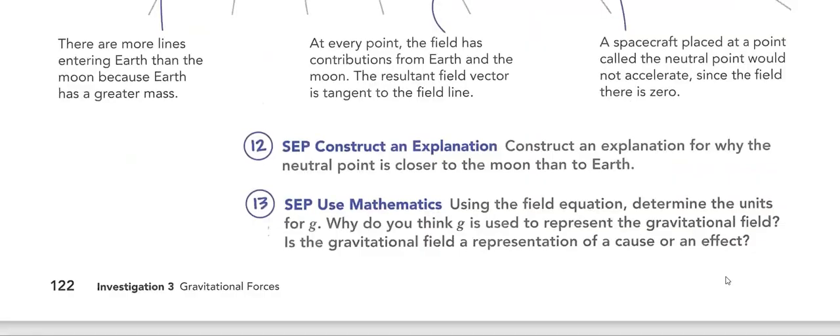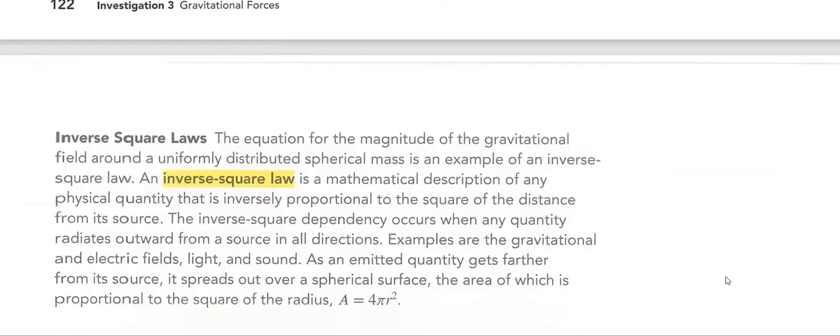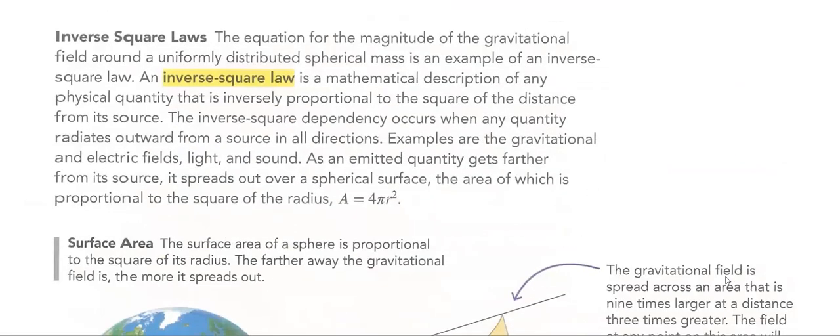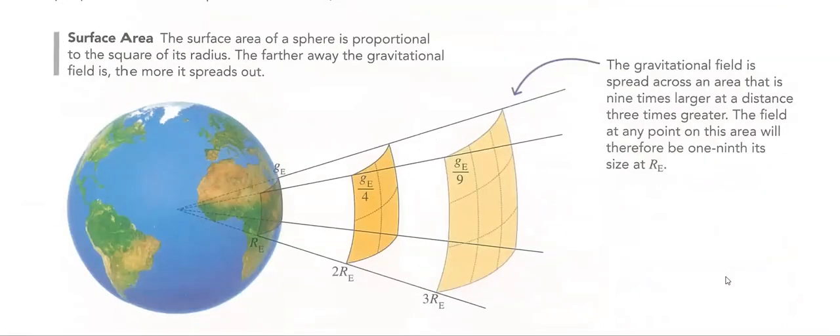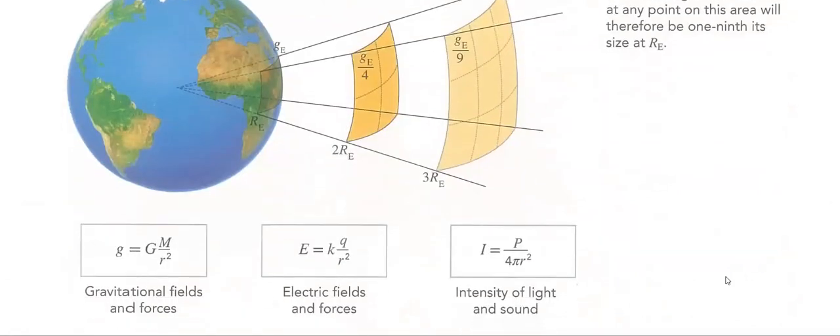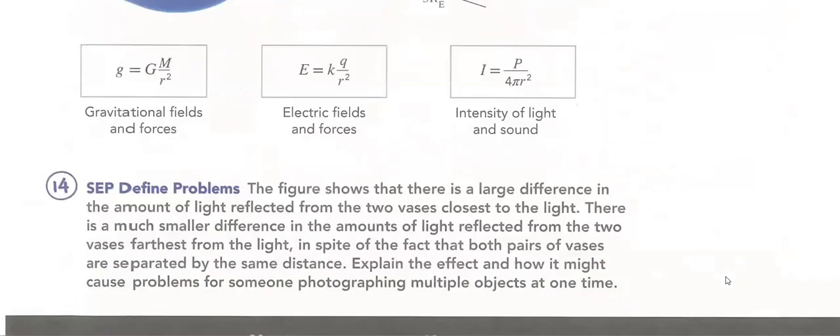The inverse square law is a mathematical description of any physical quantity that is inversely proportional to the square of the distance from its source. The surface area of a sphere is proportional to the square of its radius. We took this long time ago in geometry. We'll see how it's connected to our lesson.